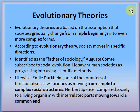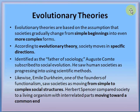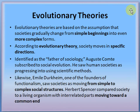According to evolutionary theory, society moves in a specific direction. August Comte, regarded as the father of sociology, saw human society as progressing using scientific methods. Emile Durkheim, the founder of functionalism, saw society as moving from simple to complex social structures. Sociologist Herbert Spencer compared society to a living organism with interrelated parts moving toward a common end. So evolutionary theory holds that society gradually moves from simple to complex form.